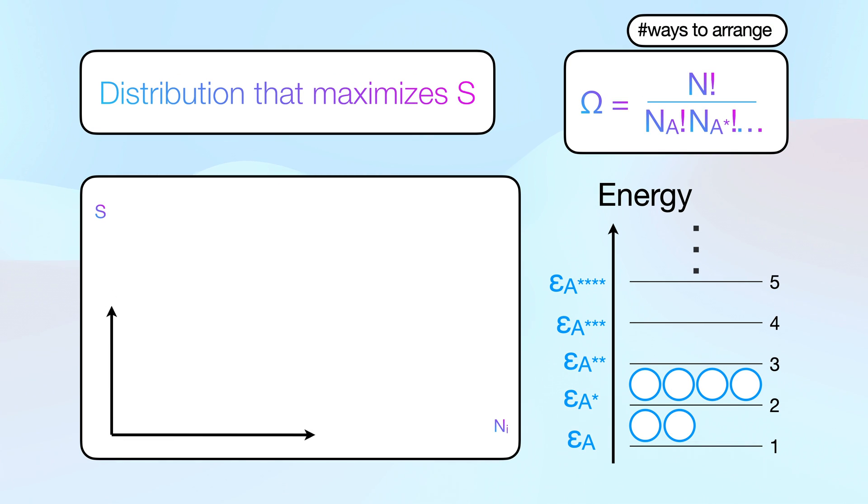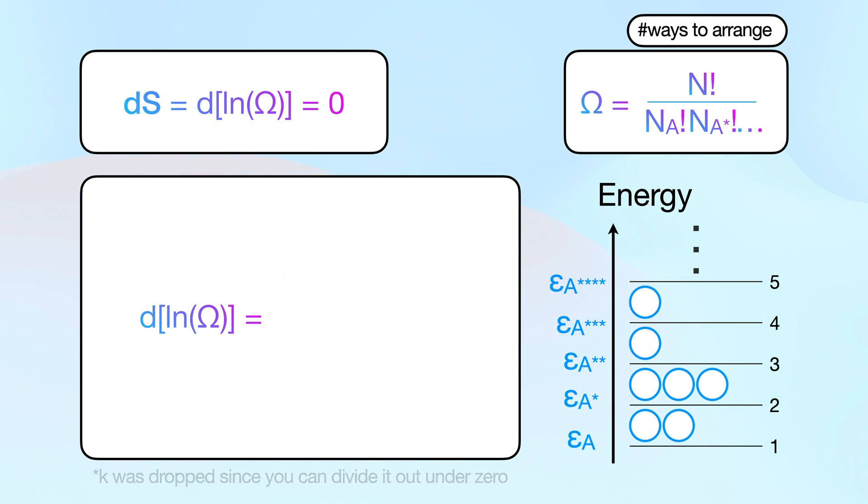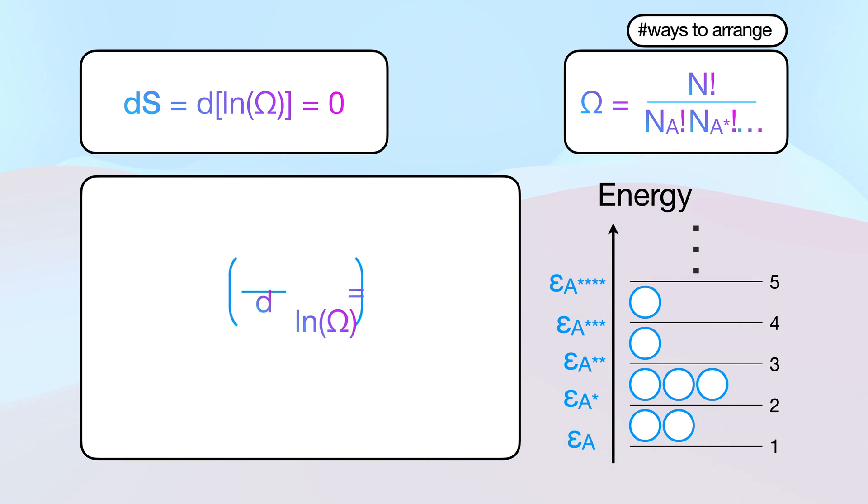Of course, there is a better way than manually sifting through all the possible arrangements. We can simply find whenever nudging the entropy by dS no longer results in an increase of entropy, or dS is equal to zero, which also equates to d log of omega is equal to zero. And since log of omega is affected by the number of molecules in all the possible levels, we would have to add up all the possible nudges from all the possible levels. All we have to do now is rewrite log of omega using a little bit of algebra, then plugging it back in.